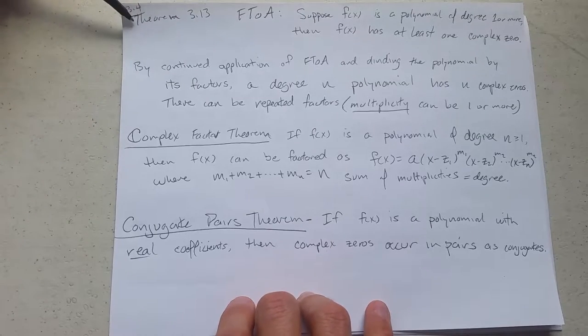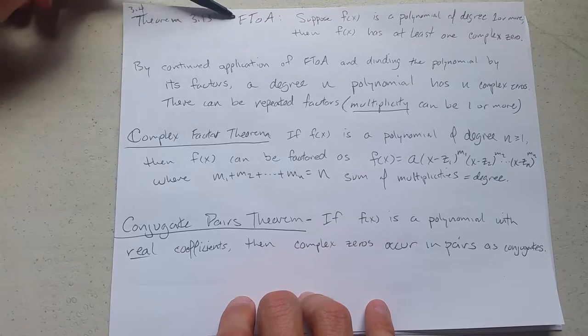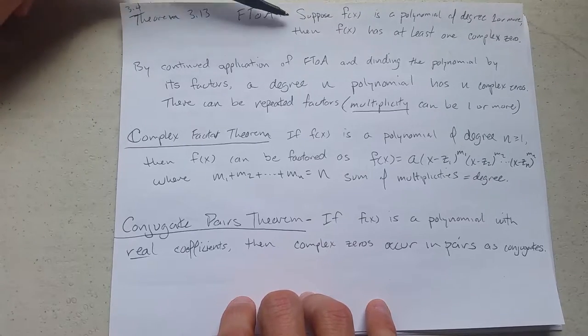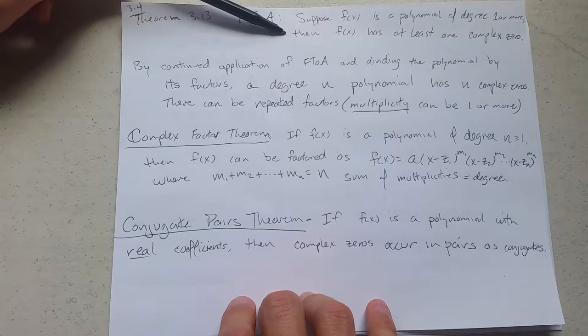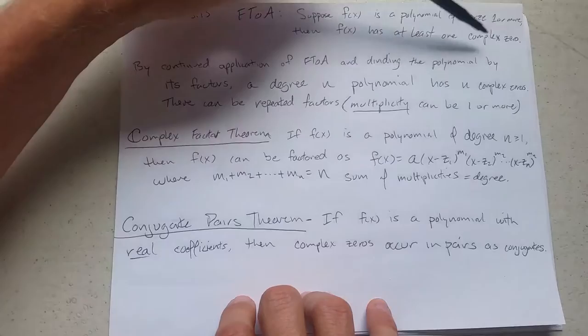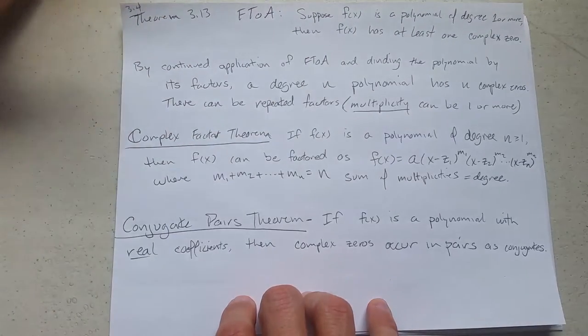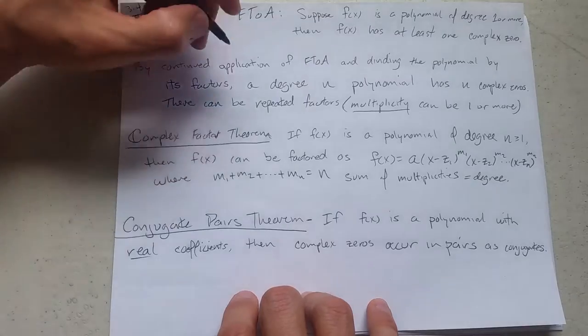Now we have a couple of theorems. One of them is the fundamental theorem of algebra. You've been doing algebra for a long time, and now you're going to learn the fundamental theorem. If you have a polynomial of degree 1 or more, then f(x) has at least one complex zero. Now we say complex zero could be a real zero.